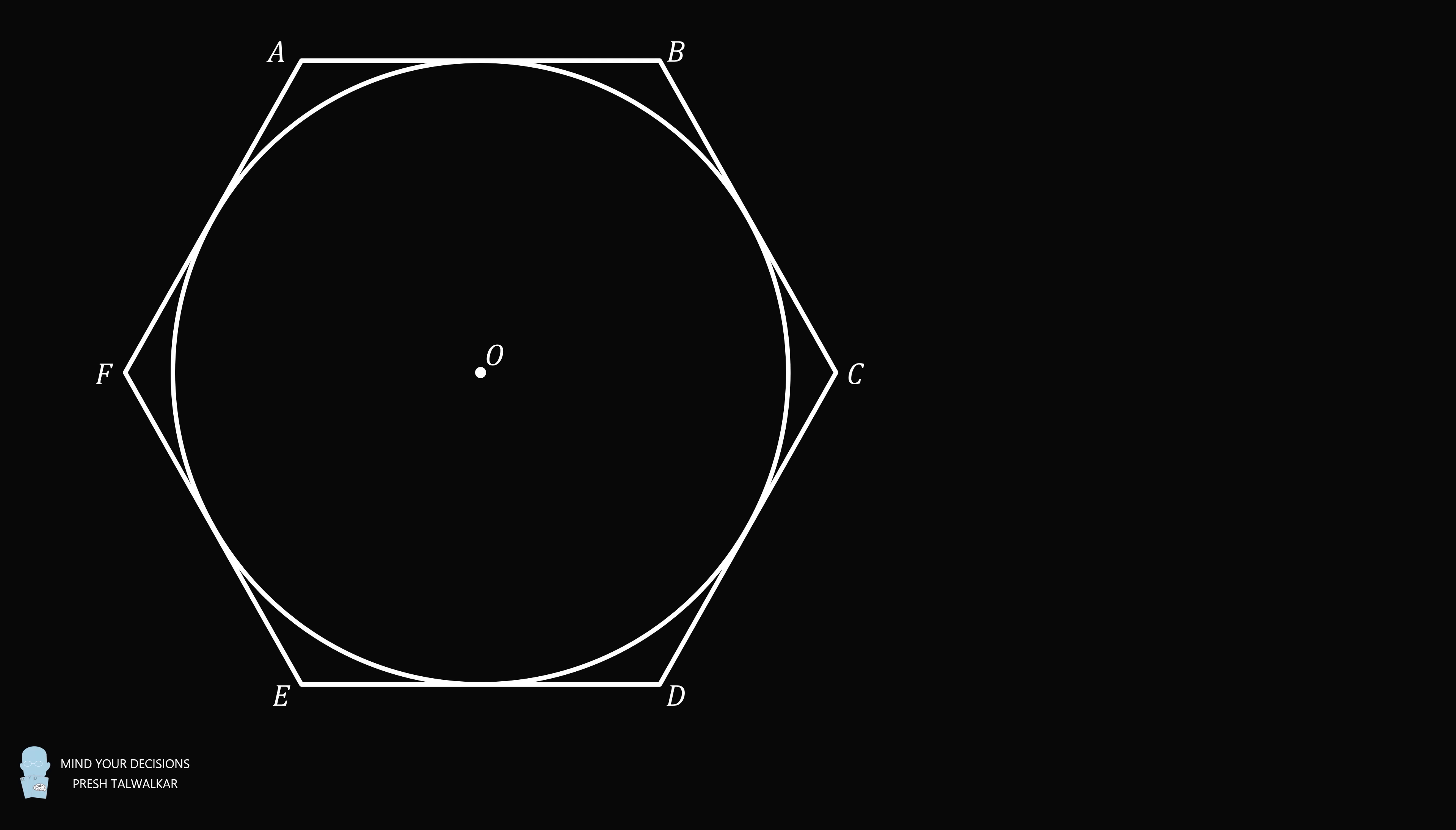Hey, this is Presh Talwalker. Start with the regular hexagon ABCDEF. Inside the hexagon, inscribe circle O, and inside circle O, inscribe the regular hexagon QRSTUV.